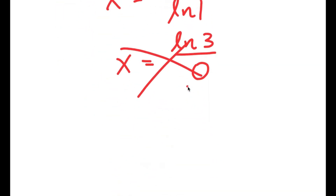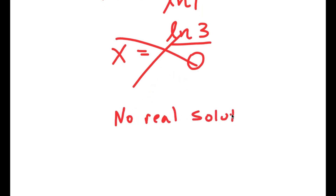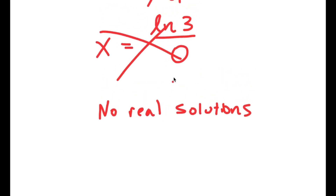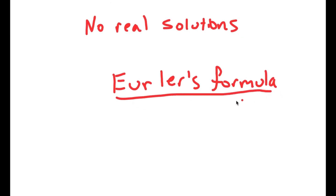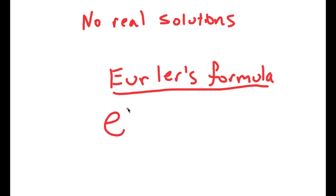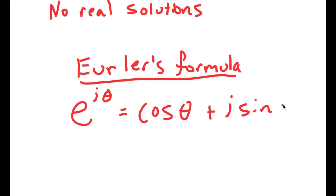So that method doesn't work. However, this just means that there are no real solutions. But there are different types of solutions. So what I'm going to do to solve this equation is, first, let's recall Euler's formula. And if you guys don't know what this is, it states that if I have something in the form e to the power of i times theta, this is equal to cos of theta plus i times sine of theta. I know this may seem a little complicated right now, but just bear with me.